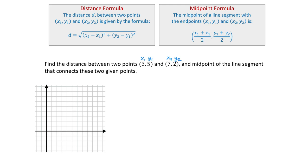To better visualize the problem we can plot the points in the rectangular coordinate system and connect them with a line segment. To plot the first point (3, 5) we start at the origin, count 3 units to the right — 1, 2, 3 — then 5 units up — 1, 2, 3, 4, 5. To plot the second point (7, 2), from the origin count 7 units to the right — 1, 2, 3, 4, 5, 6, 7 — then 2 units up. Now let's connect these points with a line segment.